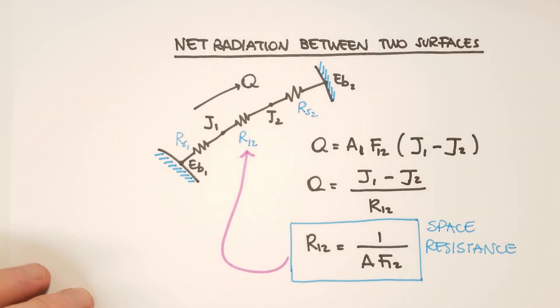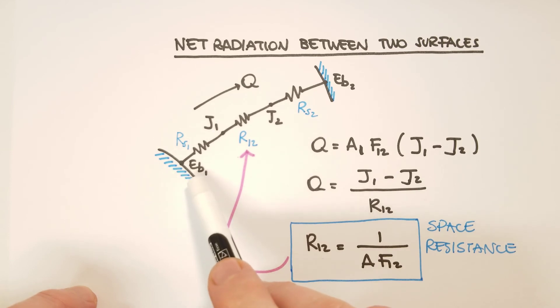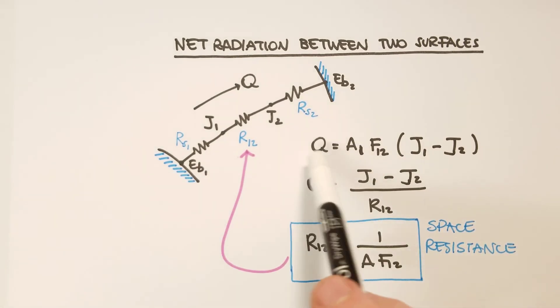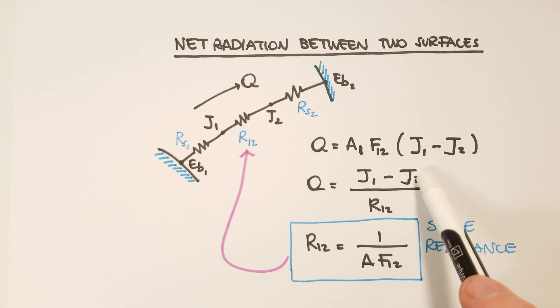And we can write a network between two gray surfaces. We have surface 1 and surface 2. We write a network where the nodes are Eb1 and Eb2 at the two extremes. And in between, we have two nodes, J1 and J2. The surface exchange heat Q, the exchange heat, must be A1·F12 times the difference between J1 and J2. So we can write Q as J1 minus J2 divided by R12. And we call this a space resistance. It's 1 divided by A times F12, the view factor. So now we have a resistance due to the fact that not all the maximum thermal radiation is exchanged between the two surfaces, because the two surfaces are in a certain particular orientation with respect to each other. And that limits the exchange between the two surfaces.